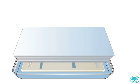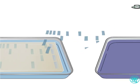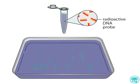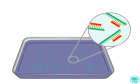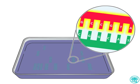The filter is treated so that the DNA adheres to it permanently, and then the filter is placed in a solution with a radioactive probe. The probe consists of single-stranded DNA that is complementary and will hybridize to the band of interest.